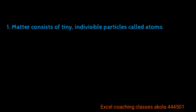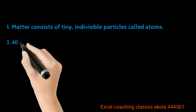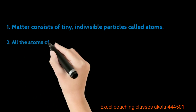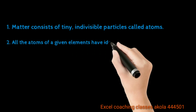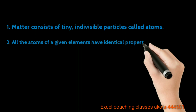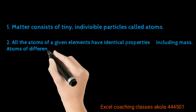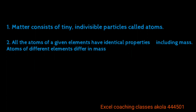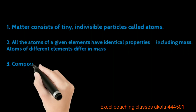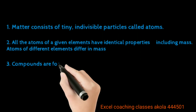The first postulate is: matter consists of tiny, indivisible particles called atoms. Material is made from tiny particles which are indivisible, called atoms. The smallest particle of matter is called an atom. The second postulate is: all atoms of a given element have identical properties, including mass. Atoms of different elements differ in mass.